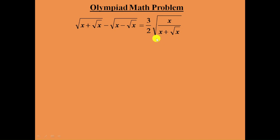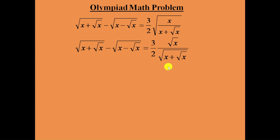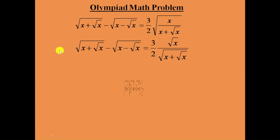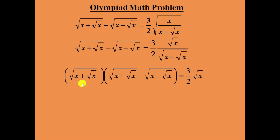First, distribute this square root to both numerator and denominator — square root to x and square root to x plus square root of x. Then bring this square root of x plus square root of x to the left side. When we bring it to the left side, it will become a multiplication, and we can see that this part and this part are both the same: square root of x plus square root of x. So it will become a whole square.